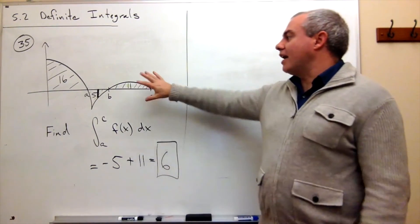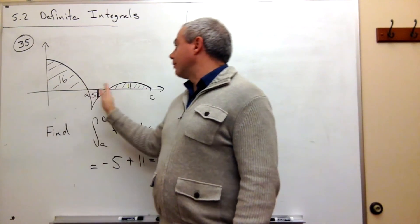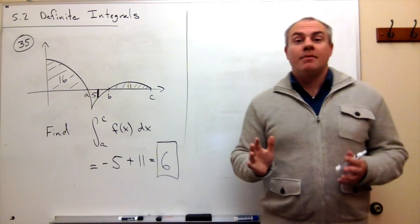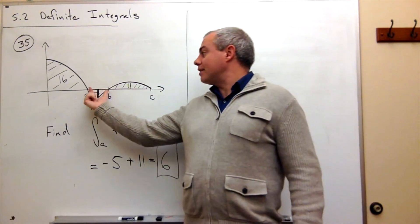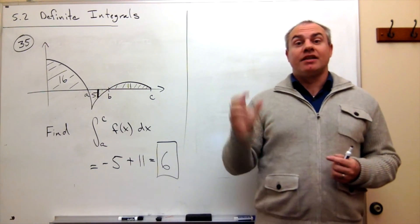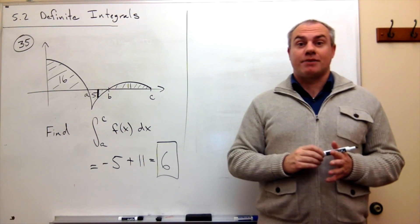We could take other integrals here: from 0 to A, 0 to B, 0 to C, B to C, all sorts of things. But we have to remember that if we include the piece from A to B, it will be interpreted as an area of negative 5.